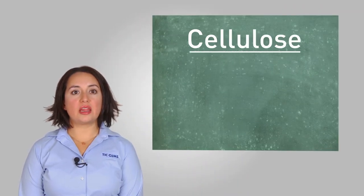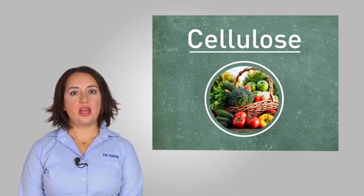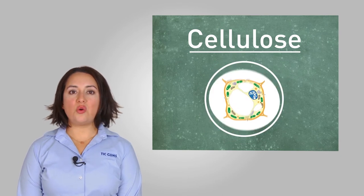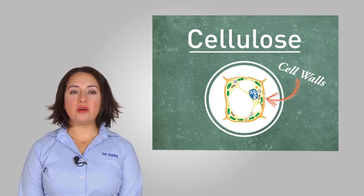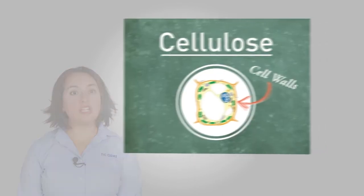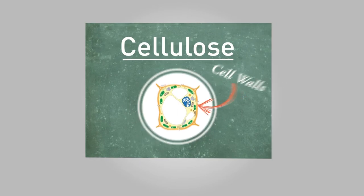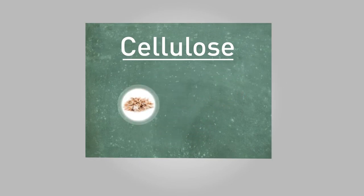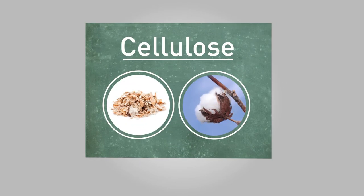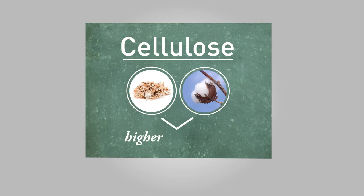Cellulose is another plant derivative that has incredible uses, but unlike pectin, isn't as widely known. It's a substance that's found in many plant-based organisms, like vegetables. Cellulose is a component in the cell walls contained in most plants and vegetation, but the concentration depends on the plant. It's mostly derived from wood and cotton, which contain much higher percentages of cellulose gum for manufacturers to utilize.